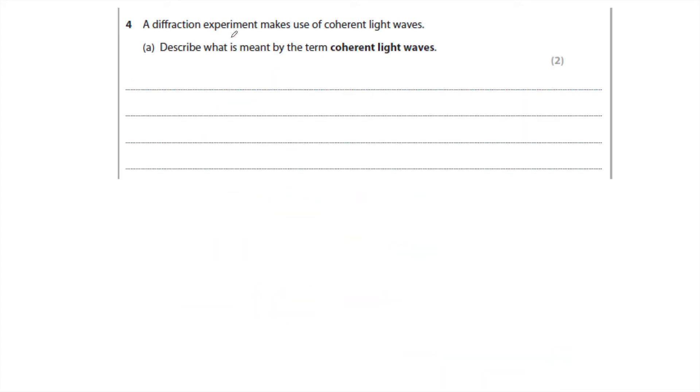A diffraction experiment makes use of coherent light waves. Explain what is meant by coherent light, and it is worth two marks. So the first thing is the light has a constant phase difference. Now you can say the light is in phase—that will give you the mark as well—but the strict definition is it has a constant phase difference. Of course, that will only give us one mark. So what else is coherent light? Well, of course, it's the same frequency or wavelength. Either of those would do.